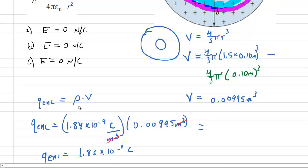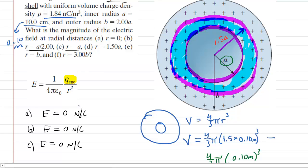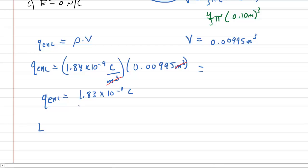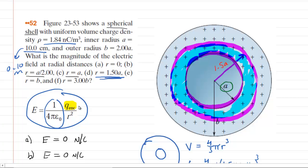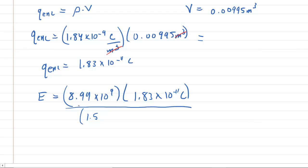Now we have the enclosed charge for our Gaussian surface. To calculate the electric field at a distance of 1.5a, we use E = k × Q_enclosed / r². The constant k is 8.99 × 10⁹. So E = (8.99 × 10⁹) × (1.83 × 10⁻¹¹) divided by (1.5 × 0.10 m)². Punching this into the calculator, we get an electric field magnitude of about 7.31 newtons per coulomb. That is the correct answer to part D.